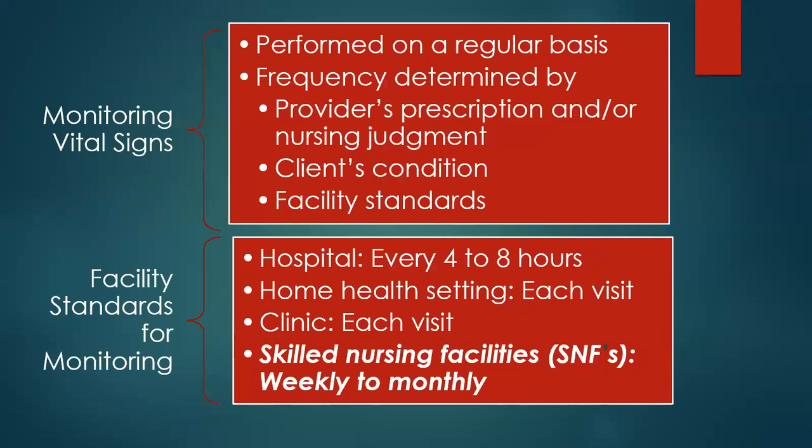The monitoring of vital signs can be performed on a regular basis. If you have somebody in the ICU and the patient is more critical, you might be monitoring them more closely. Hospitals might monitor every 4 to 8 hours on a med-surg unit; if you're in the ICU or emergency room, every 5 to 15 minutes. In a home health care setting, you'll do vital signs with each visit. In a skilled nursing facility, you might only do it weekly to monthly, depending on the patient's status.